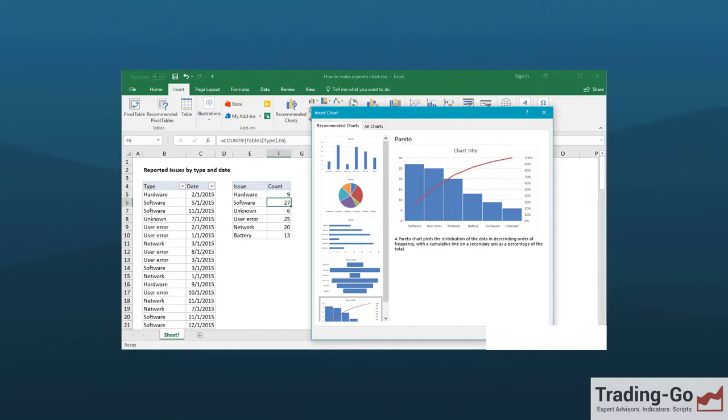20% of trades will bring you 80% of income and 80% of transactions will provide only 20% of income. The same is true for losing trades. 80% of the losses will be in the 20% of trades and 20% losses will be related to 80% of trades. Using this information, you can analyze your trades and create a new strategy, thereby increasing profits and minimizing losses at the same time.